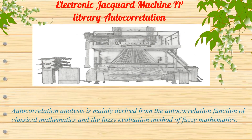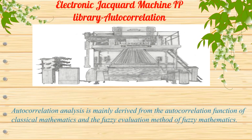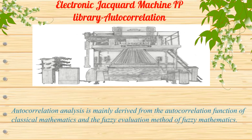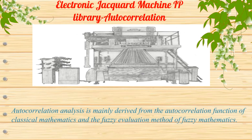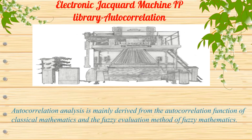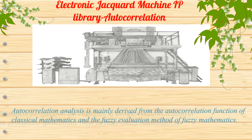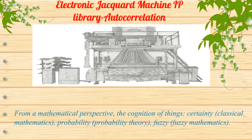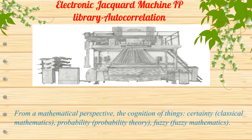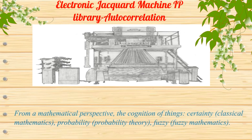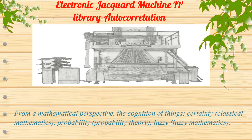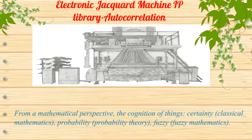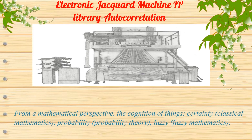Autocorrelation analysis is mainly derived from the autocorrelation function of classical mathematics and the fuzzy evaluation method of fuzzy mathematics. From a mathematical perspective, the cognition of things involves certainty in classical mathematics, probability in probability theory, and fuzziness in fuzzy mathematics.